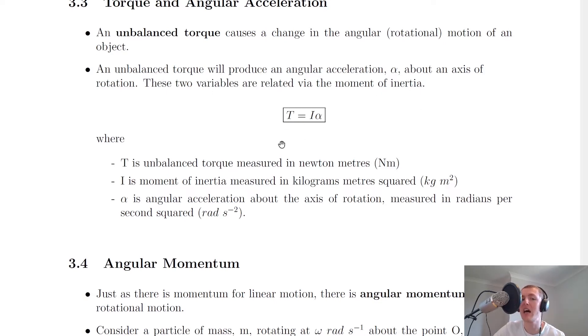So this gives us T equals I alpha, where T is the unbalanced torque measured in newton meters, I is the moment of inertia measured in kilogram meter squared, and alpha is the angular acceleration about the axis of rotation measured in radians per second squared.